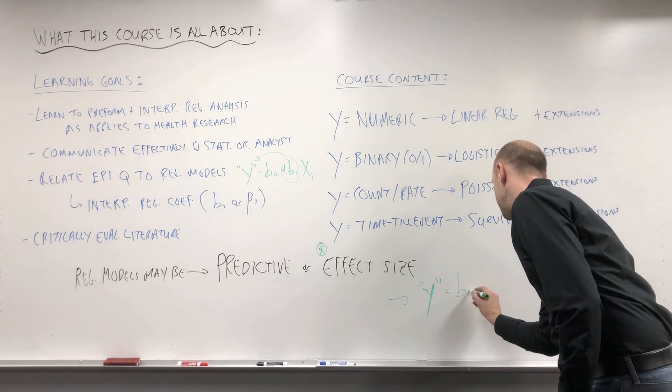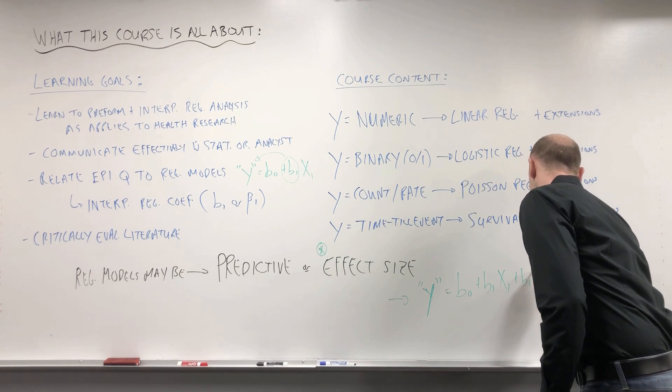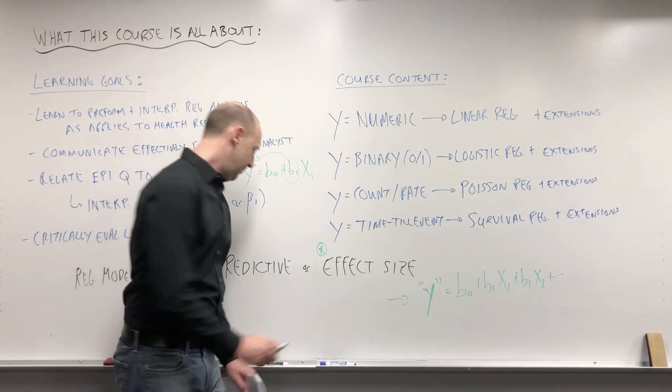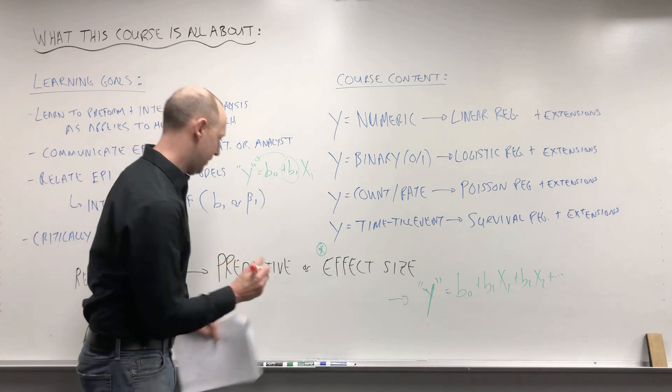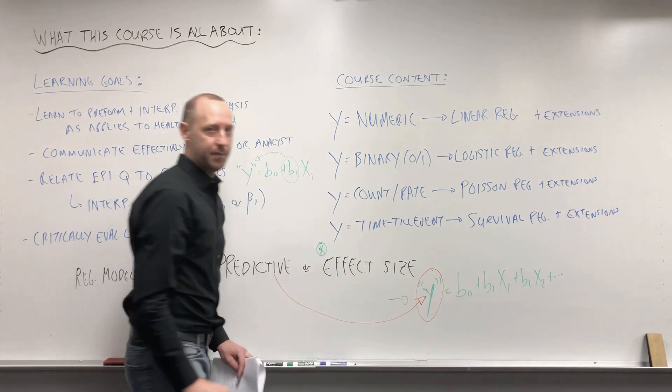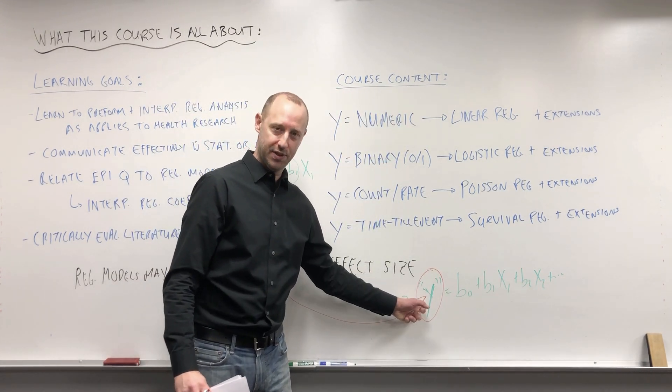When we're looking at a predictive model, our focus is on this outcome. What variables do we need to get a really good guess at what the outcome is going to be?